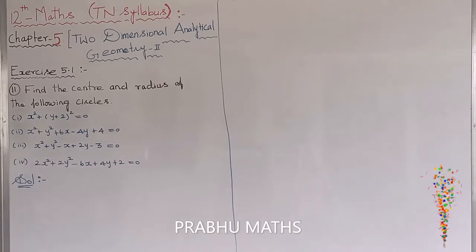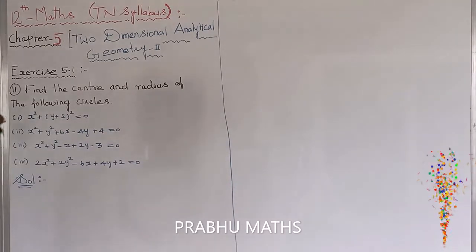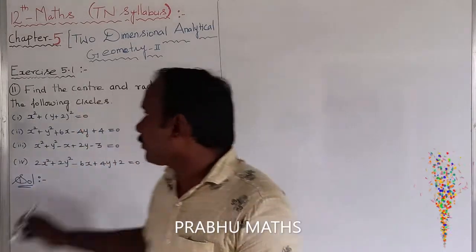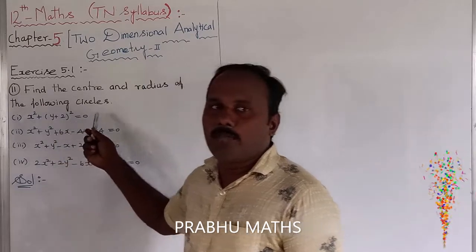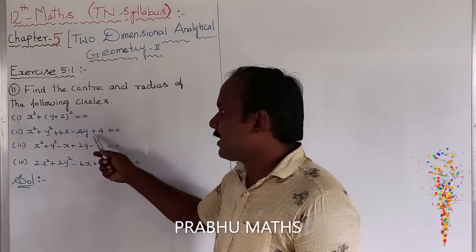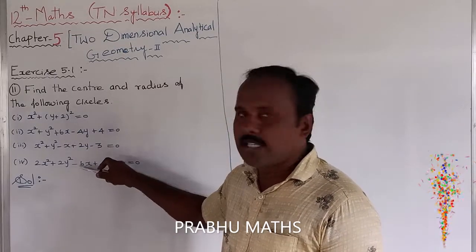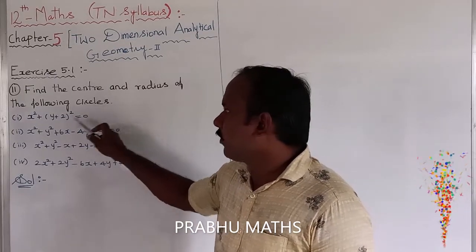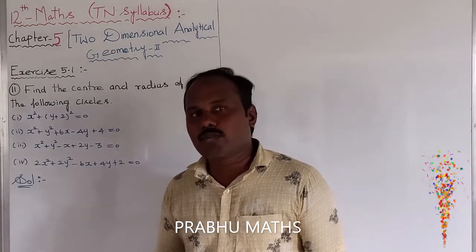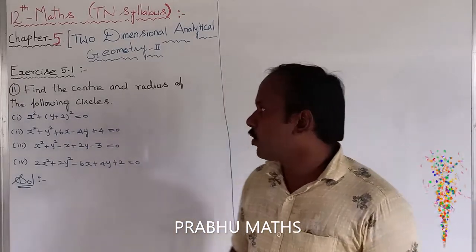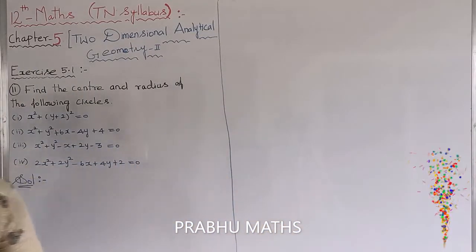Problem 5.1: find the center and radius of the following circles. The first circle is x² + (y - 2)² = 0. This is the standard general form of the circle equation, which is: x minus h, the whole square, plus y minus k, the whole square, equals r squared. Now let us take the first subdivision.